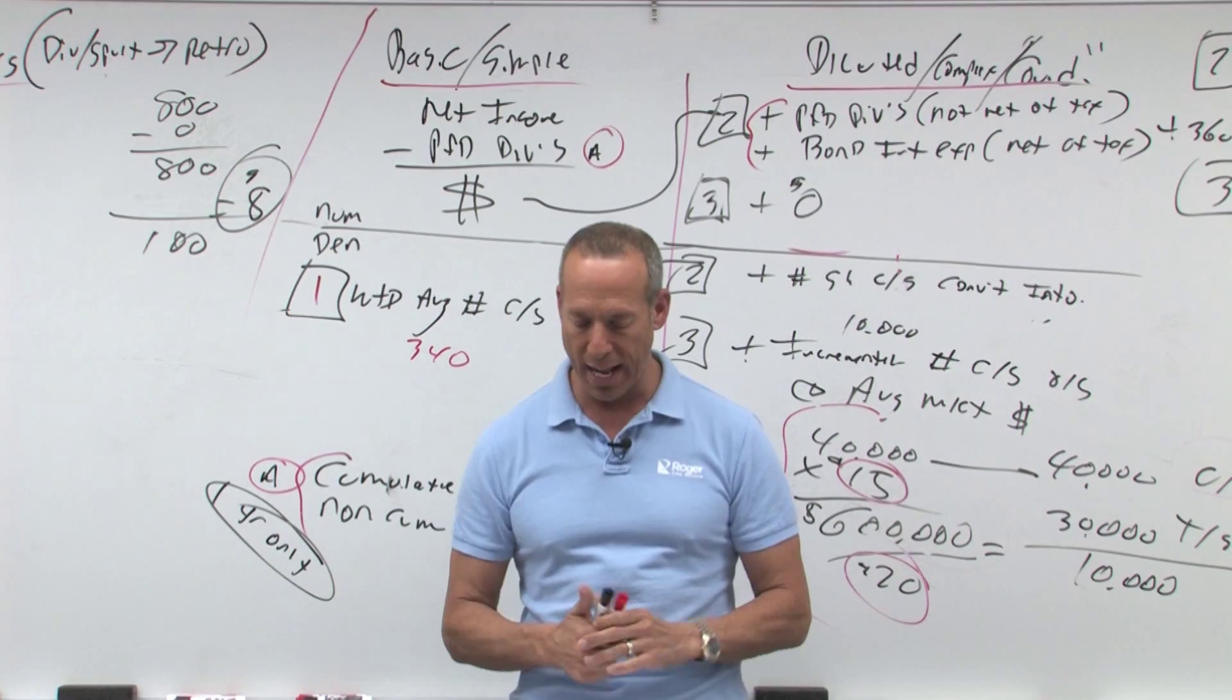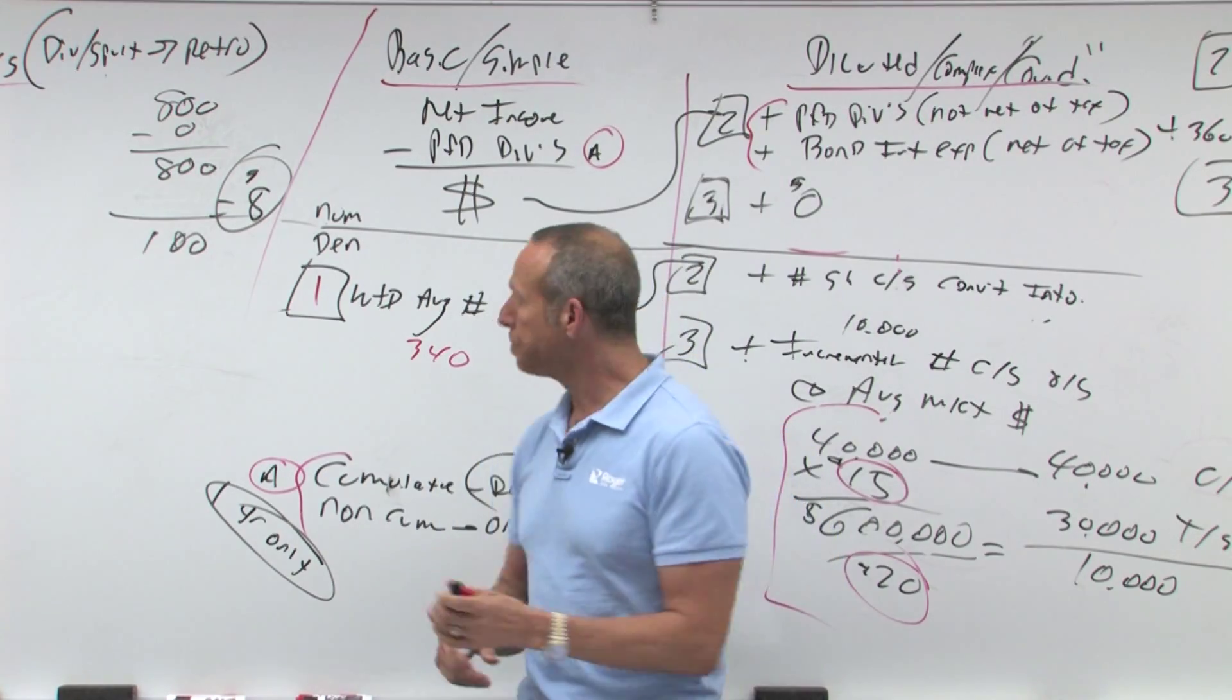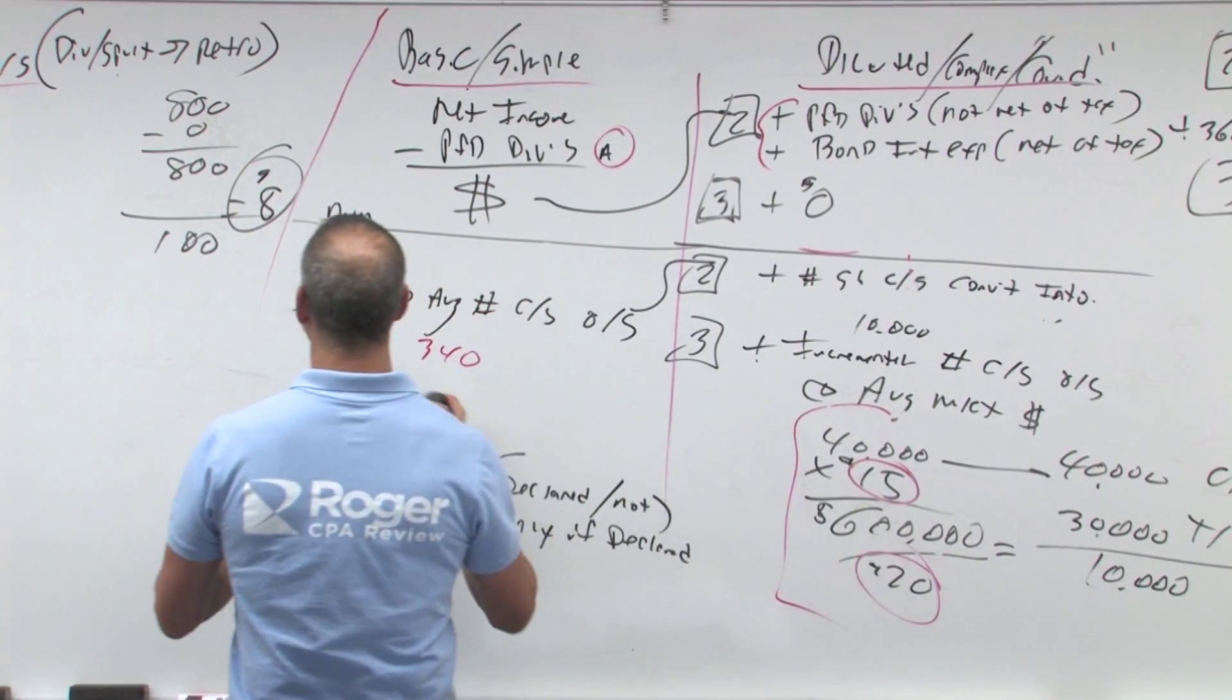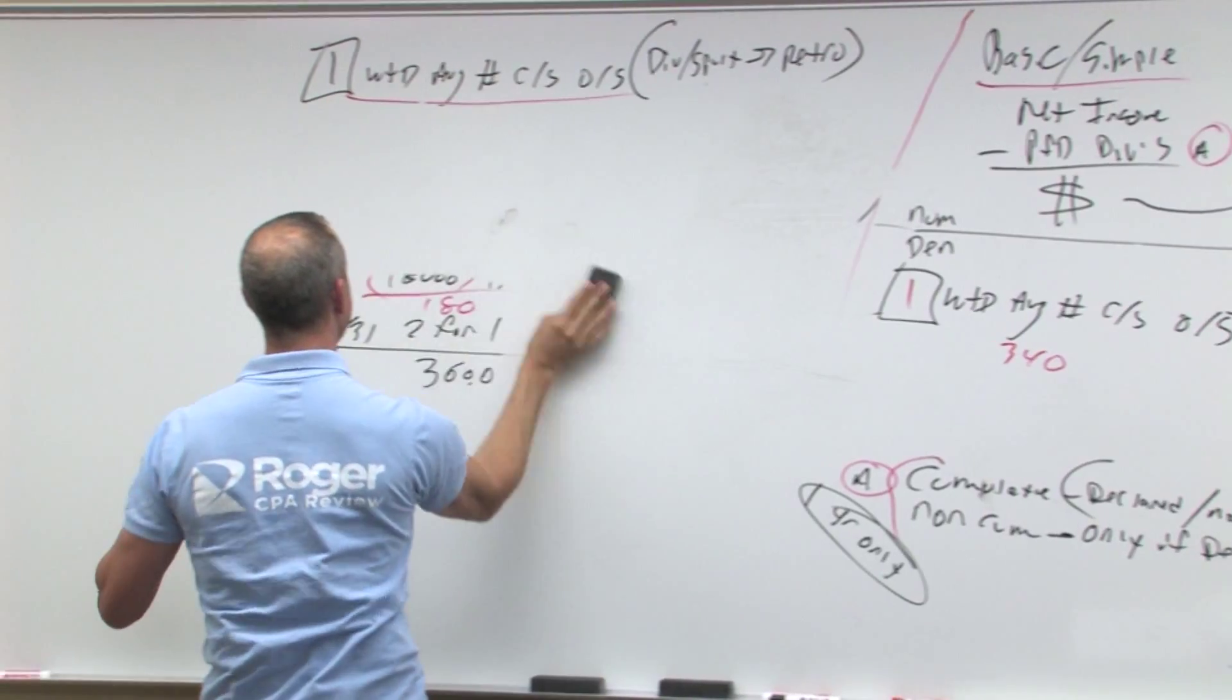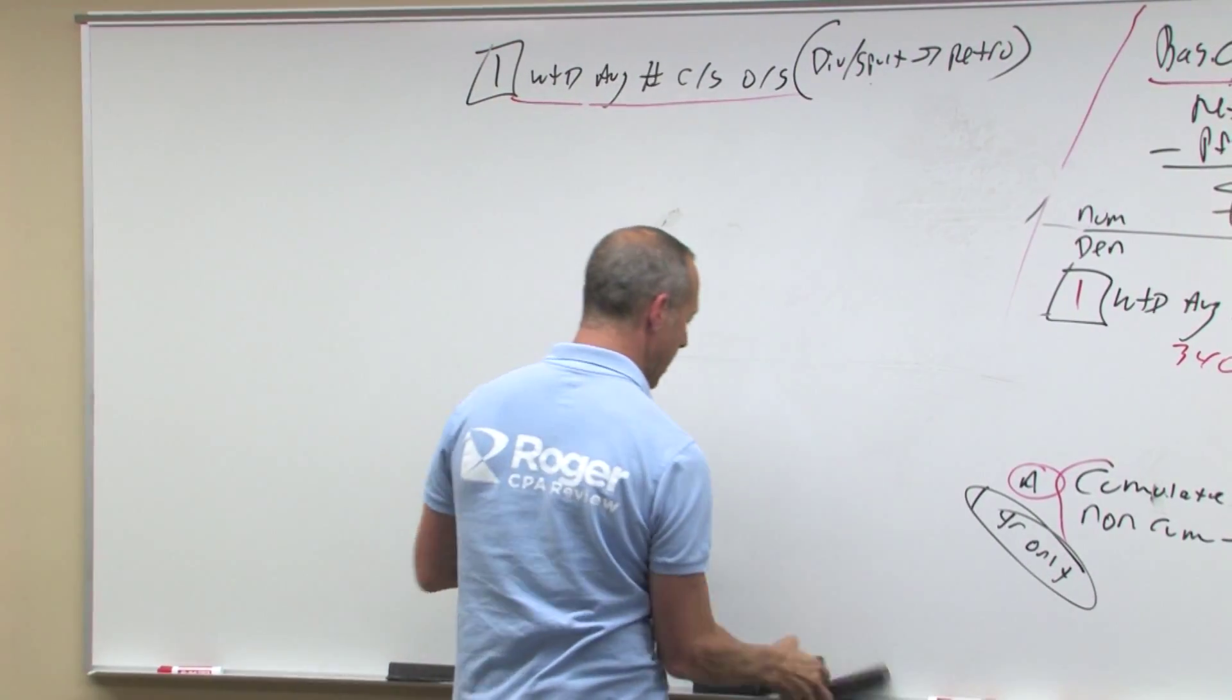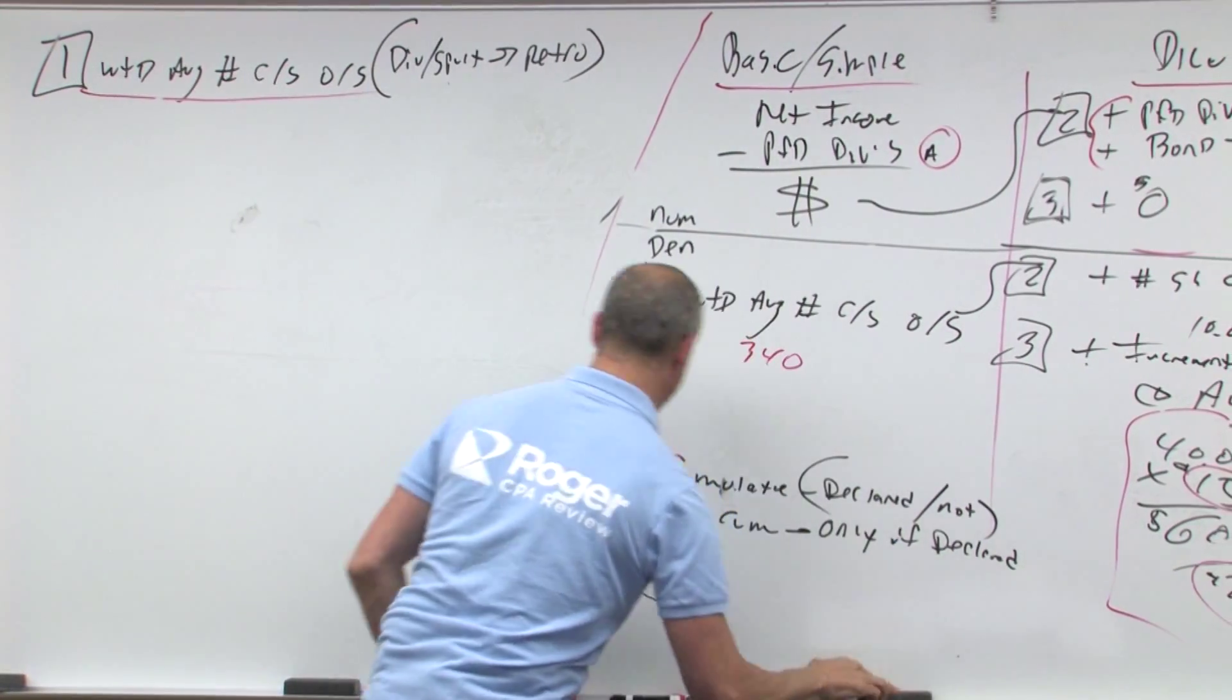What amount should Strachko report as basic earnings per share for X3 and X2 comparative income statements? All right, so let's clean this up and see what's going on. We need to figure out the weighted average number of stock outstanding.